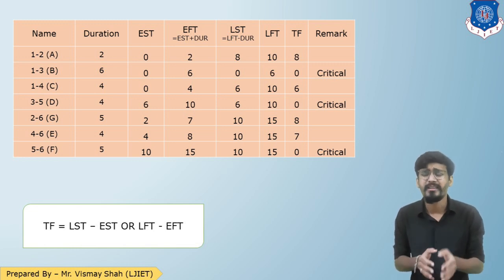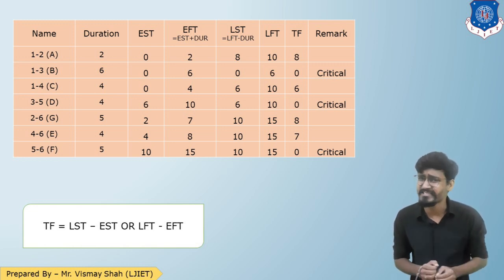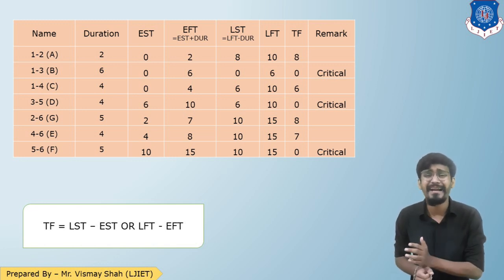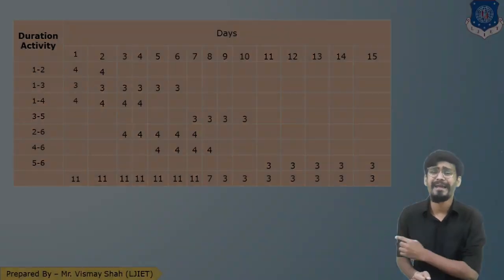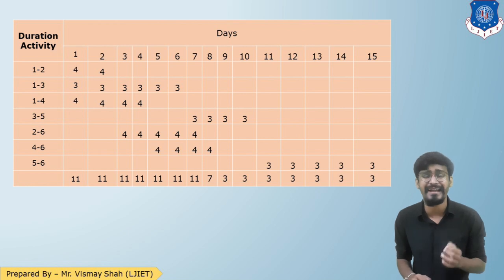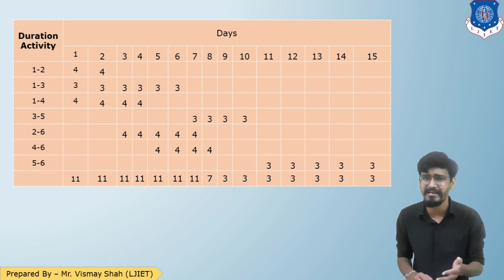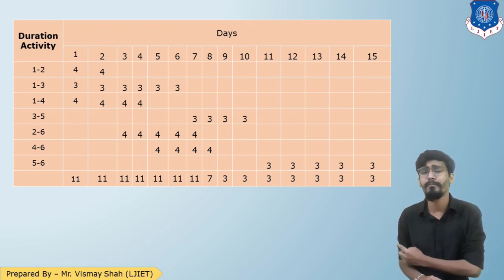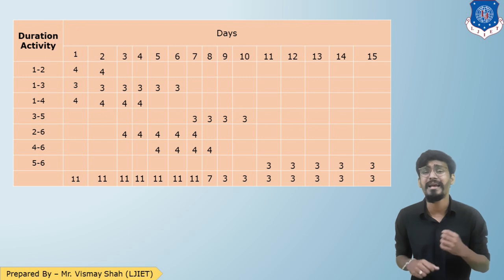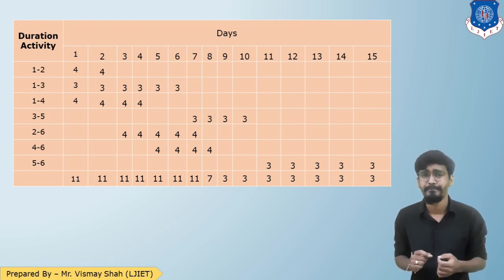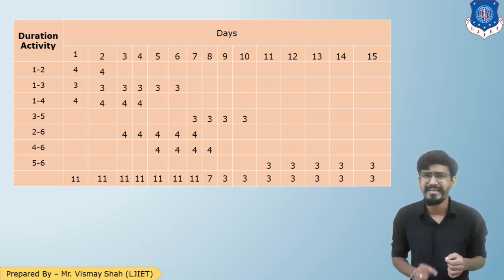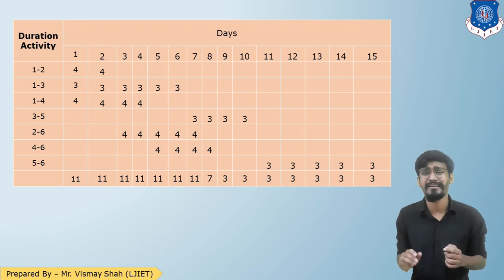Since we know the total duration of the project is 15 days, let us prepare a day-by-day chart of the mason requirement. Here is the day-by-day table: activity 1-2 requires 4 masons, activity 1-3 requires 3 masons, and so on. Below each day, there is a total mason requirement for the particular day of the project.